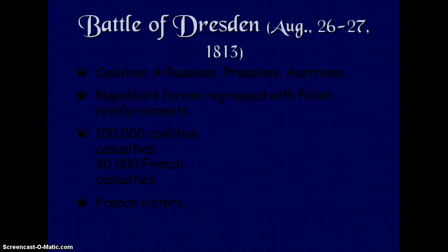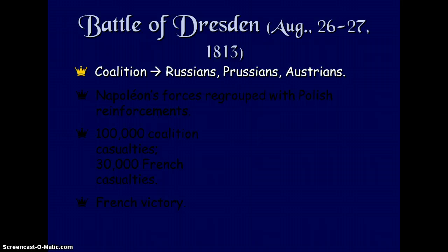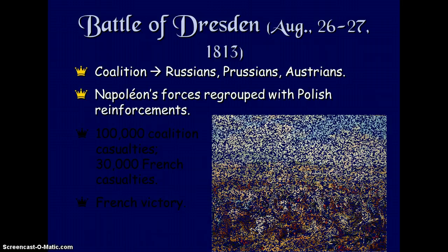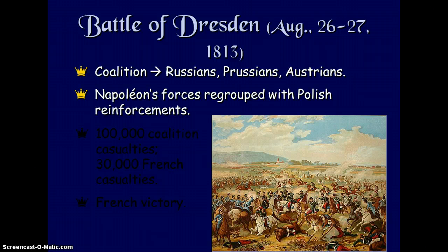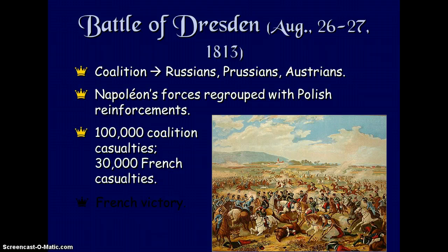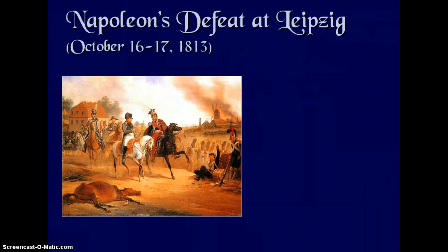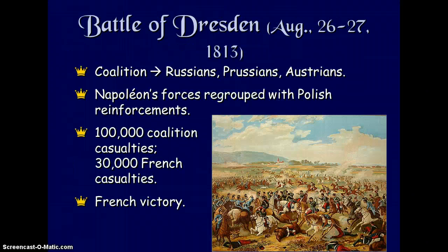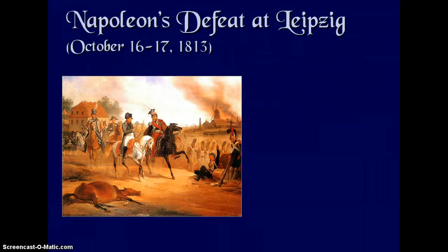The Battle of Dresden in 1813 was a coalition between Russians, Prussians, and Austrians. Napoleon's forces regrouped with Polish reinforcements — 100,000 coalition casualties versus 30,000 French casualties. In this battle, the French were victorious.